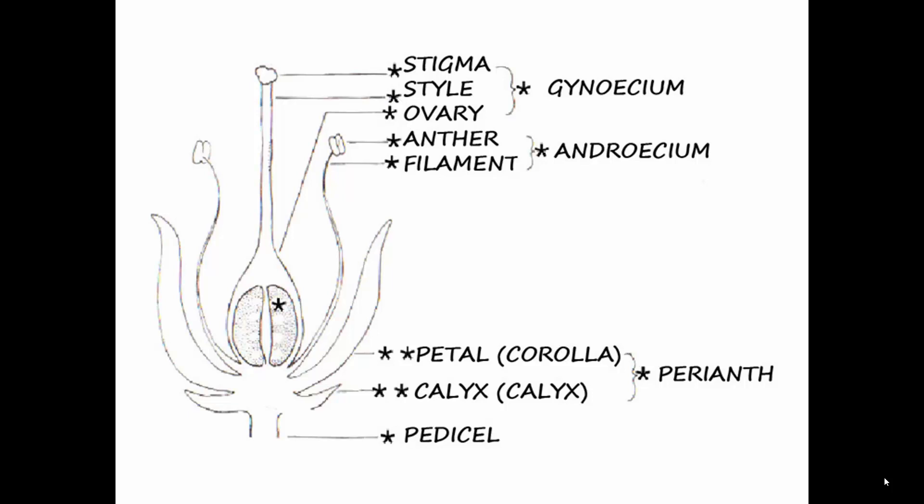The pistil, or gynoecium, has basically three parts — four if you count the interior. There's the ovary at the bottom, within which there are ovules: the ovary is the future fruit and the ovules are the future seeds. Way at the top is a special receptive area for pollen called the stigma, and the style connects the stigma with the ovary.